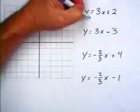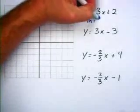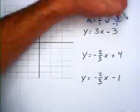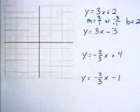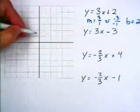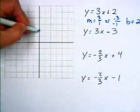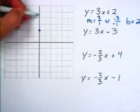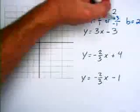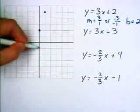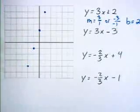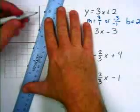We start by noticing that the slope is 3 over 1, or negative 3 over negative 1, and the y-intercept is 2. Starting with the y-intercept at 2, the slope is up 3 to the right one, or down 3 to the left one. We graph those and get a perfect line.